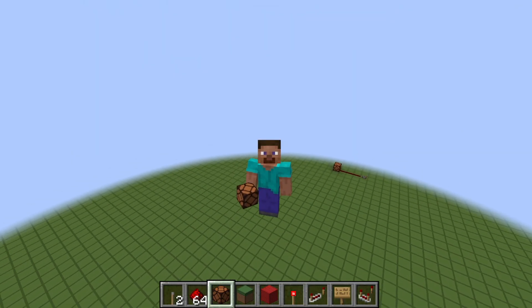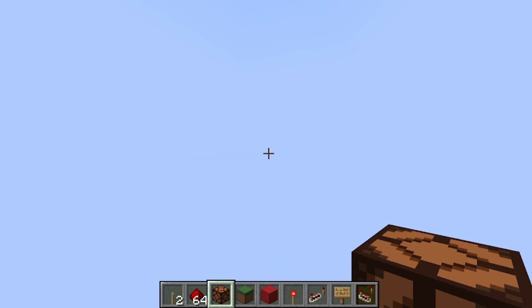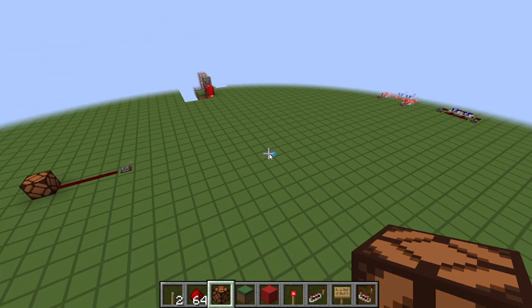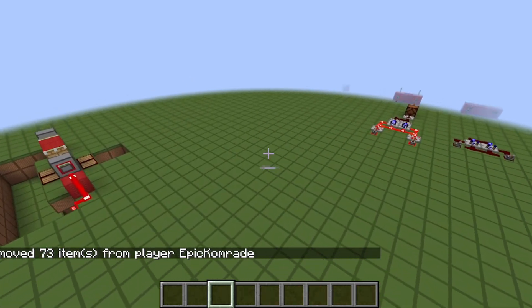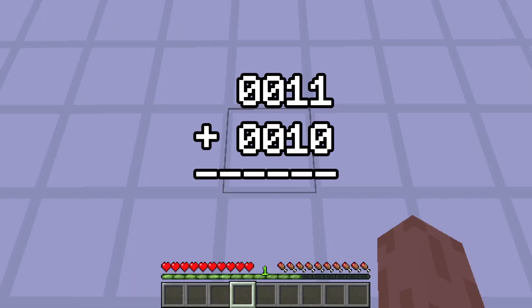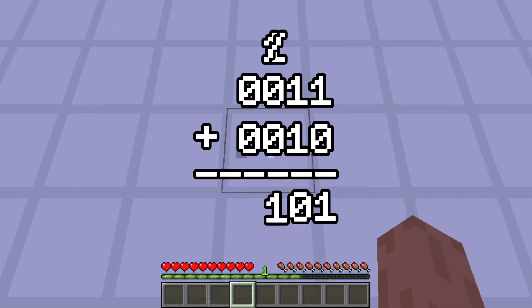Why do these gates matter? Sure, they're cool to mess around with. But when you combine them, you unlock something powerful. With just a few gates, you can do math, like actually add numbers out in binary, just like a real computer does.